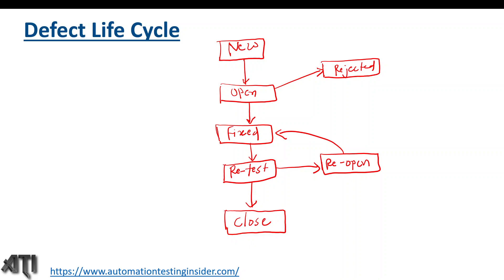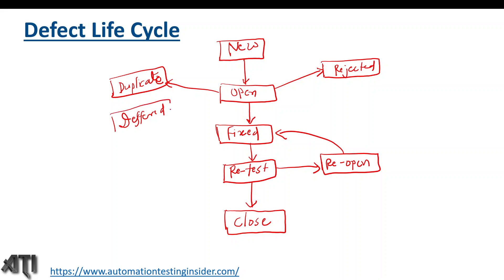Another status is 'Duplicate' — if a defect matches any previous defect, the developer will mark it as duplicate; when the previous defect is fixed, this one is also considered fixed. We also have a 'Deferred' status — if a defect is not important enough to fix in the current cycle, it may be fixed in the next cycle. And finally, 'Not a Bug' — if a defect does not impact the functionality much, the status is changed to 'Not a Bug'.